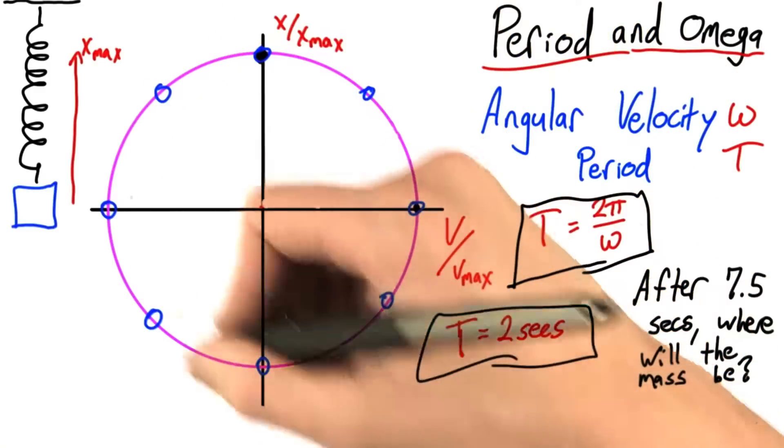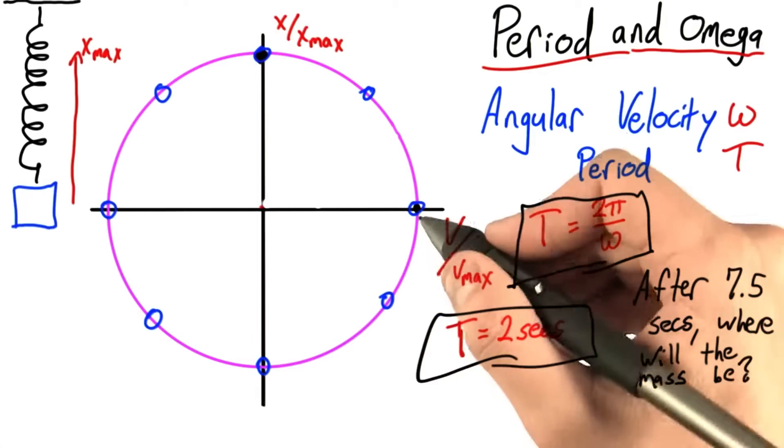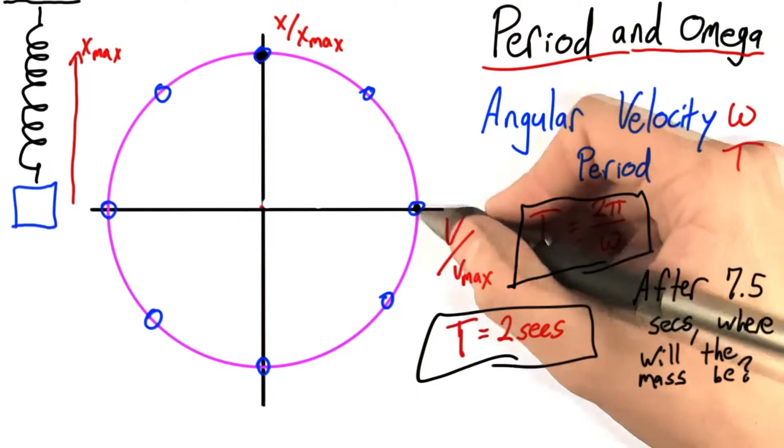After seven seconds, that's half a period. And then another half a second, that's another half of what's left. We'd wind up here.